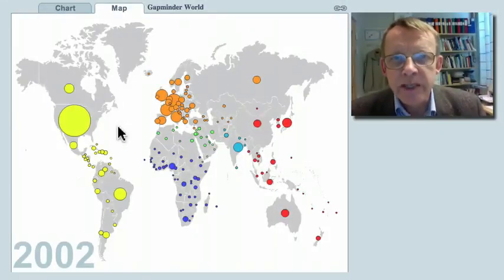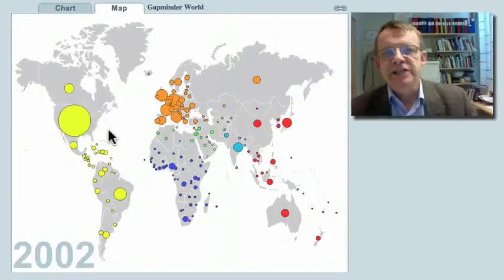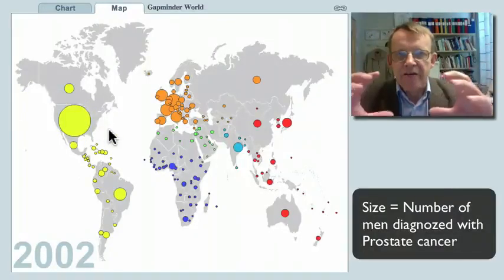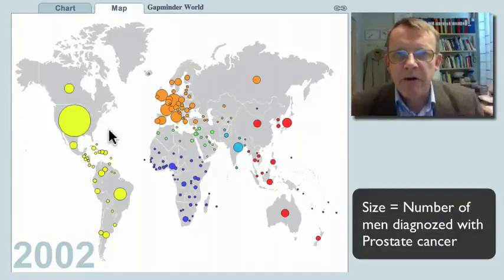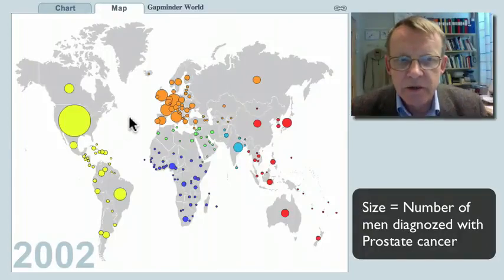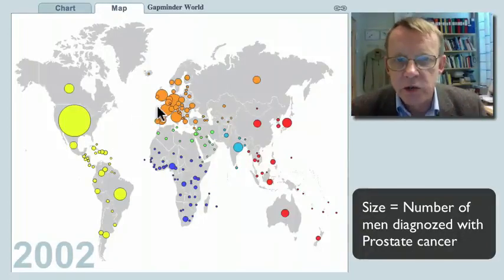Prostate cancer is most frequently reported from the United States of America. The size of the bubbles on this graph represent the number of men diagnosed with this cancer. You can also see that it's common in West Europe.